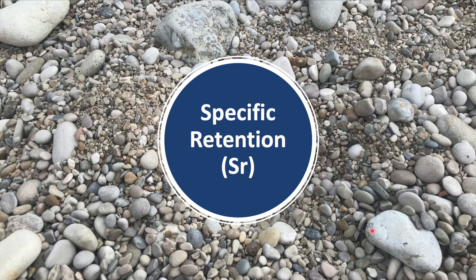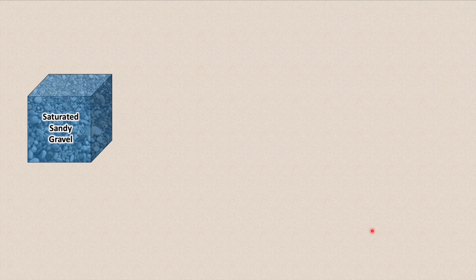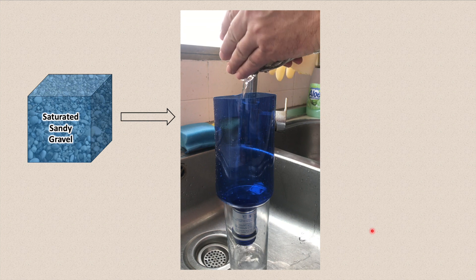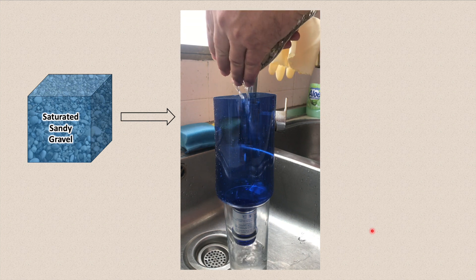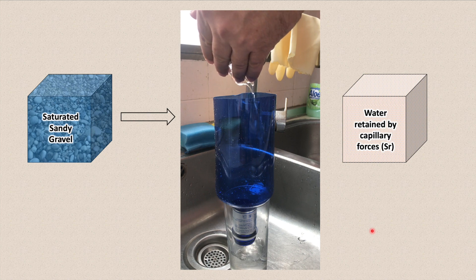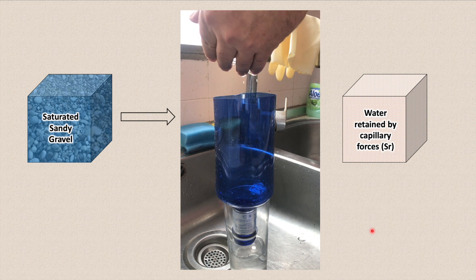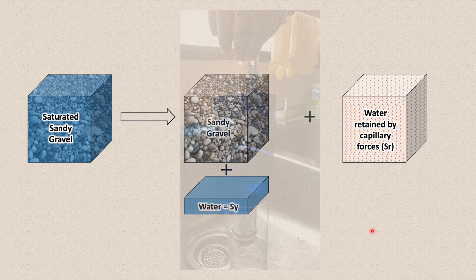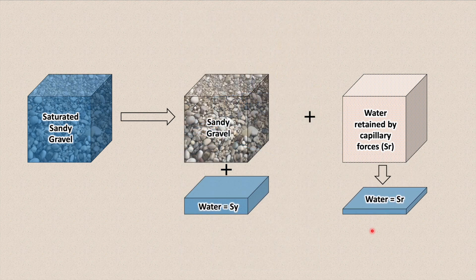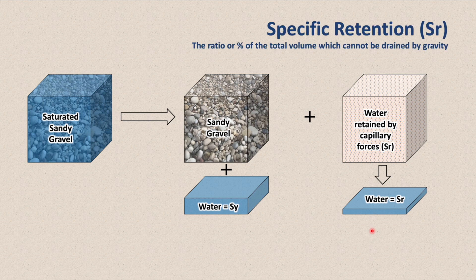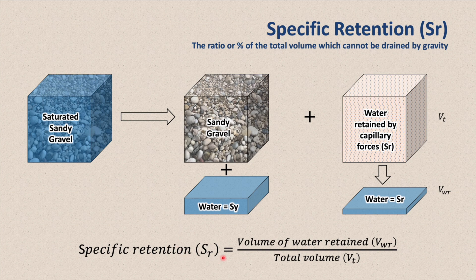To answer this question we need to look at specific retention. A certain amount of water drained out of our saturated sandy gravel, which is called the specific yield. However, some of the water cannot drain out of the sandy gravel — it remains stuck to the sand and gravel particles by capillary forces. This is called the specific retention, and it is defined as the ratio or percentage of the total volume which cannot be drained by gravity. We calculate it by dividing the volume of water retained by the total volume of our sample.